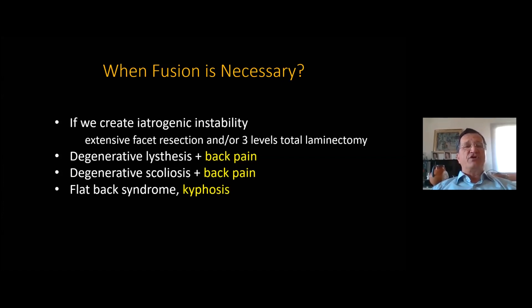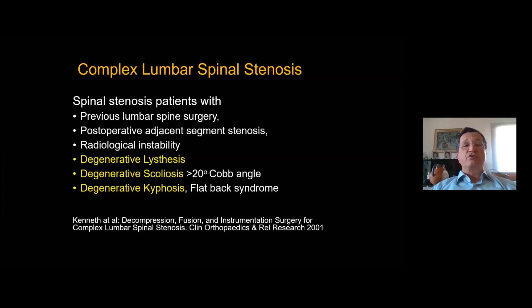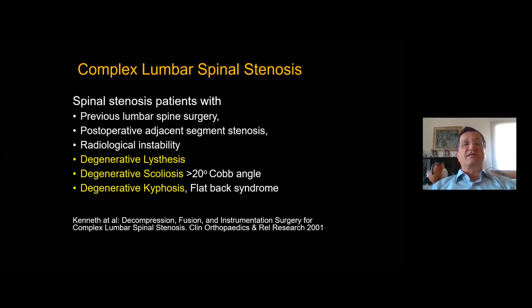When is fusion necessary? If you create iatrogenic instability, if there is degenerative spondylolisthesis or scoliosis with back pain, or if there is flat back syndrome with kyphosis — these are the main indications for fusion. We can use the terminology 'complex lumbar spine stenosis' if there is additional degenerative spondylolisthesis, scoliosis, or kyphosis, if there is radiological instability, if there is a previous lumbar spine surgery, or if there is post-operative adjacent segment stenosis.